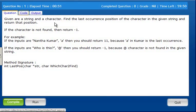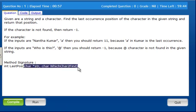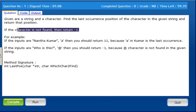Right, in the program, let's see what the problem is. Given are a string and a character, a string and character are given. Find the last occurrence position of the character in the given string and return that position. If the character is not found then return minus one.